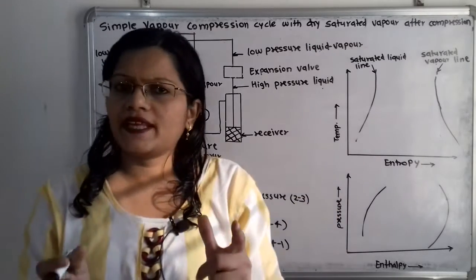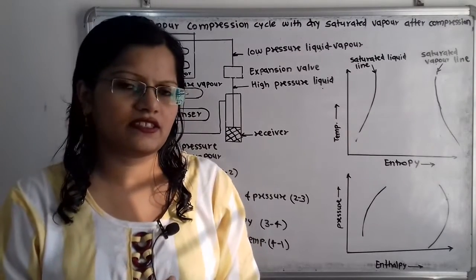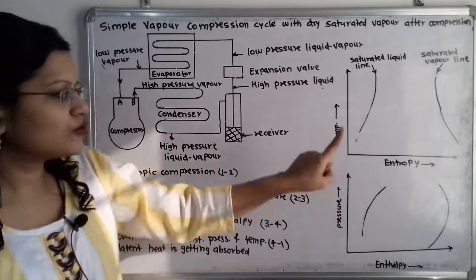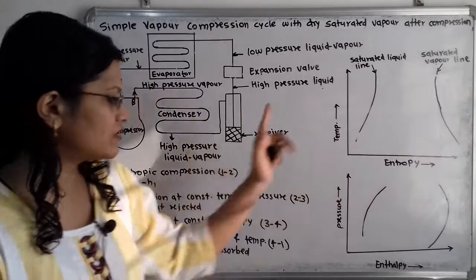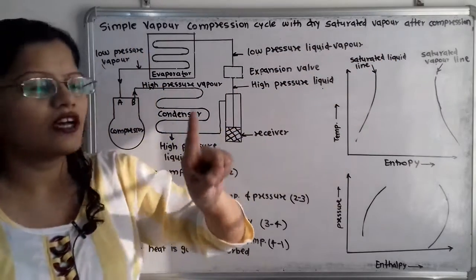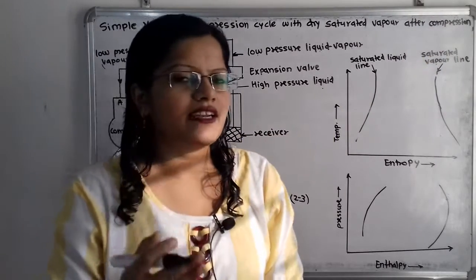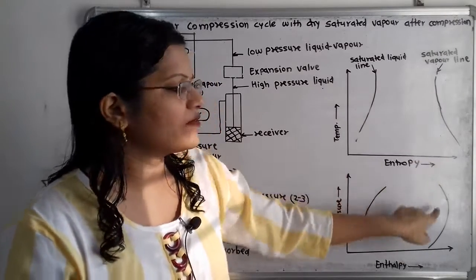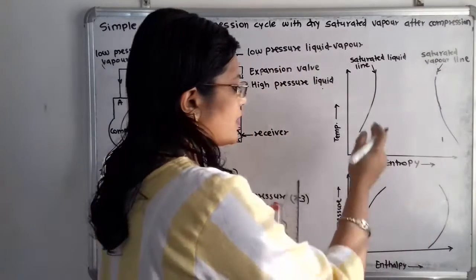As the temperature of the refrigerant increases, its enthalpy — the heat content — also increases. So while drawing these diagrams, we must show: increase in temperature, increase in pressure, increase in enthalpy, and entropy remaining constant. Since our condition is dry saturated vapor after compression, point 2 must lie on the saturated vapor line. We start from point 1 and draw a straight vertical line.